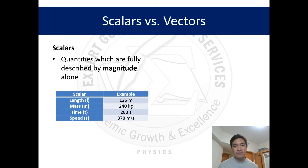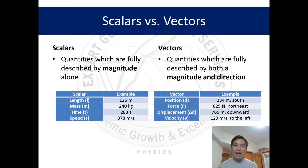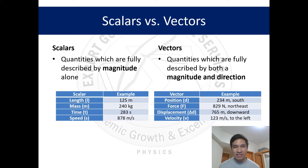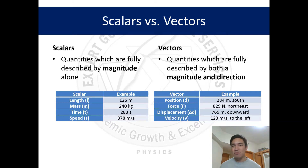On the other hand, when we talk about vectors, vectors are quantities which are fully described by both a magnitude and a direction. Notice the difference — for vectors you now have direction. So again, vectors have magnitude and direction, which makes them unique from scalars. Examples of vectors are as follows.